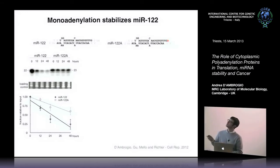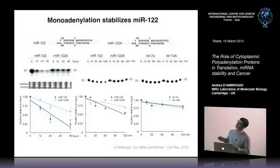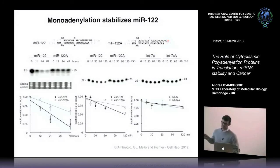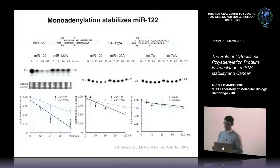I also simplified the system by incubating the two RNA species directly in cell extracts. I could replicate the same results: miR-122 with no A decays at a certain rate, while miR-122+A remains more stable. However, for another microRNA selected at random, having an A or not did not make a big difference — so the stability of the two forms is comparable for that microRNA.